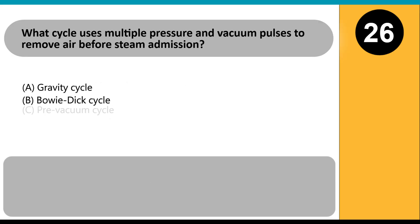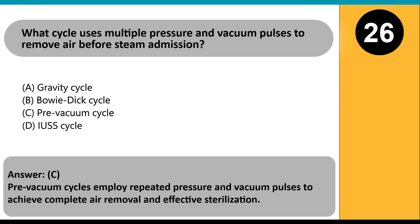What cycle uses multiple pressure and vacuum pulses to remove air before steam admission? A. Gravity cycle. B. Bowie-Dick cycle. C. Pre-vacuum cycle. D. IUSS cycle. Answer: C. Pre-vacuum cycles employ repeated pressure and vacuum pulses to achieve complete air removal and effective sterilization.